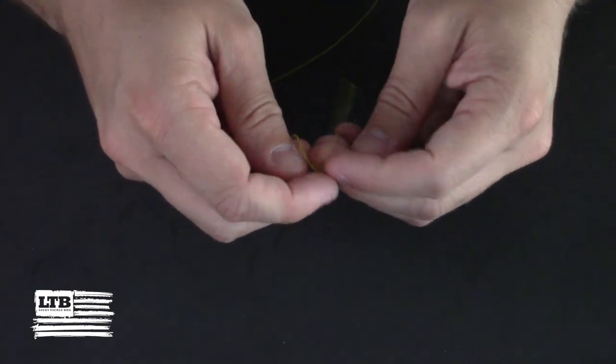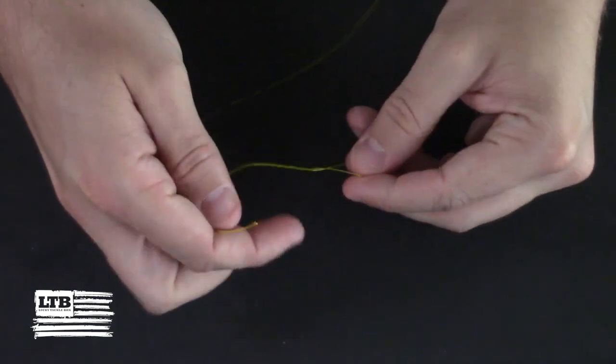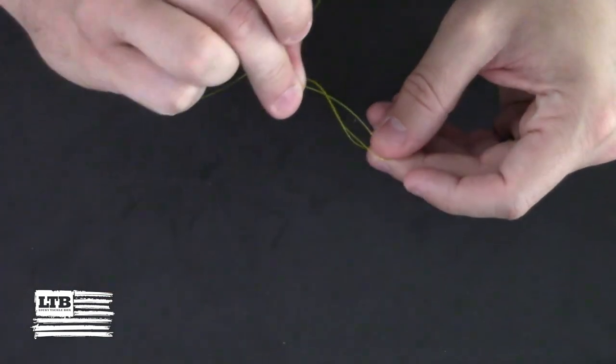After that we take the tag end of our line and feed it back through the initial loop created when starting our knot.